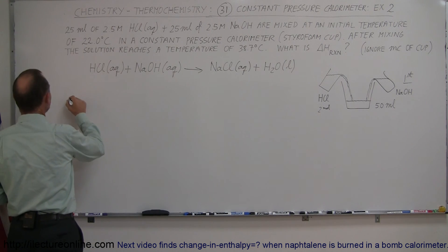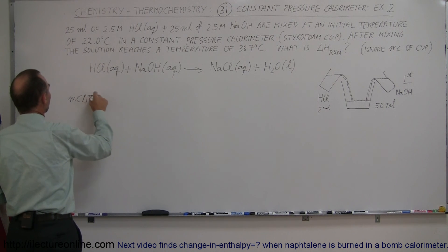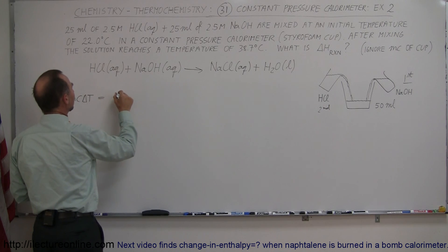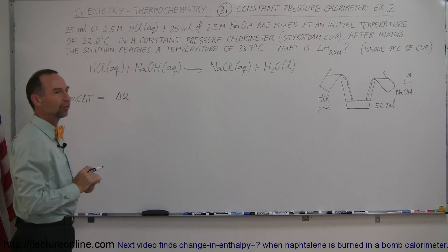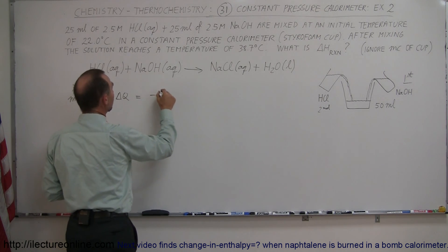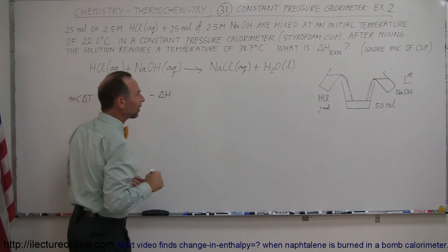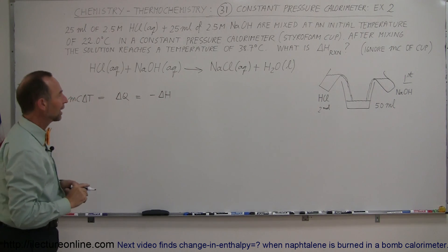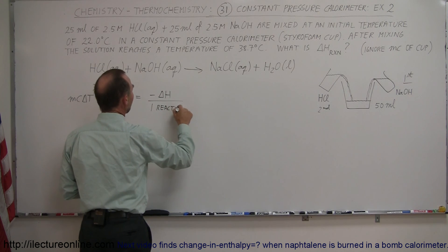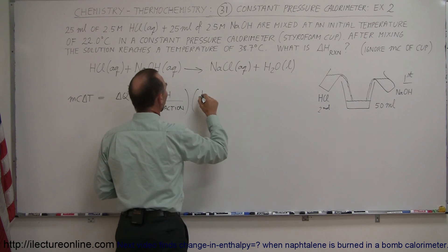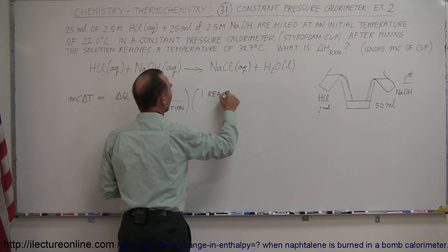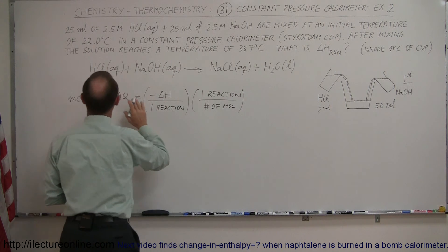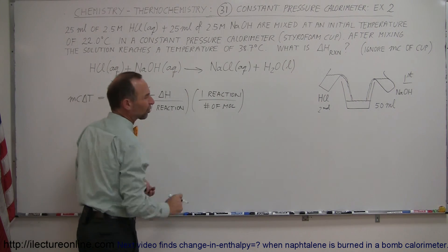The equation we're going to use is that the heat absorbed by the solution — MCΔт — equals the delta Q, the amount of heat given off by the reaction. This is equal to the enthalpy change, and we put a negative in front of it because enthalpy is a negative quantity when it's exothermic, so we have to compensate with the negative sign. Now we have to consider how many moles of substance are in the reaction. In this case it's one mole of HCl per one mole of NaOH, so this is just going to be one.